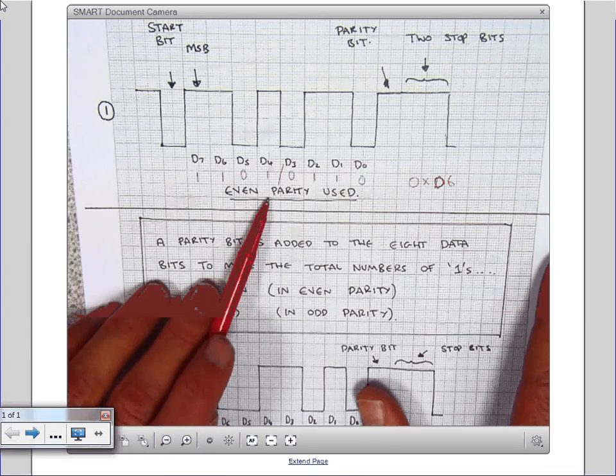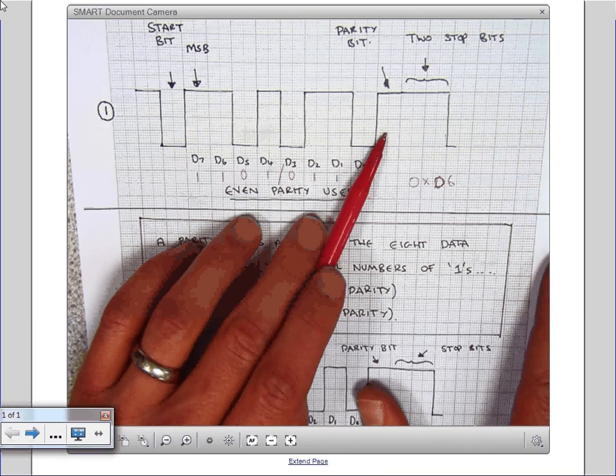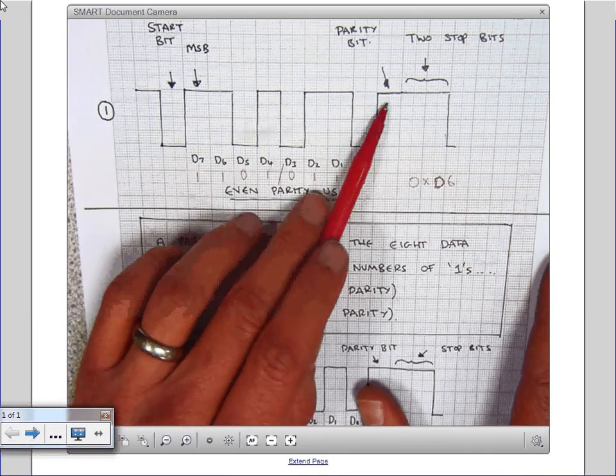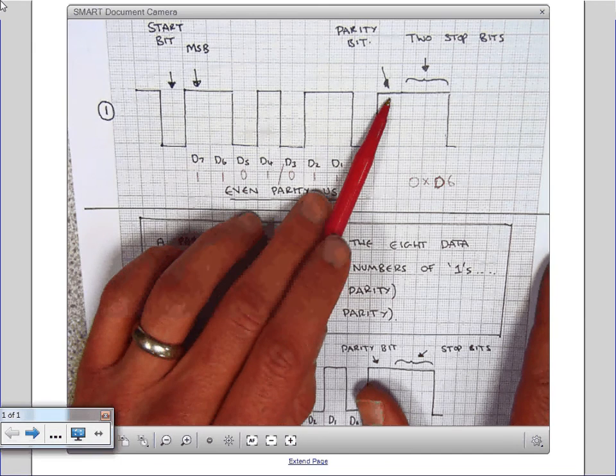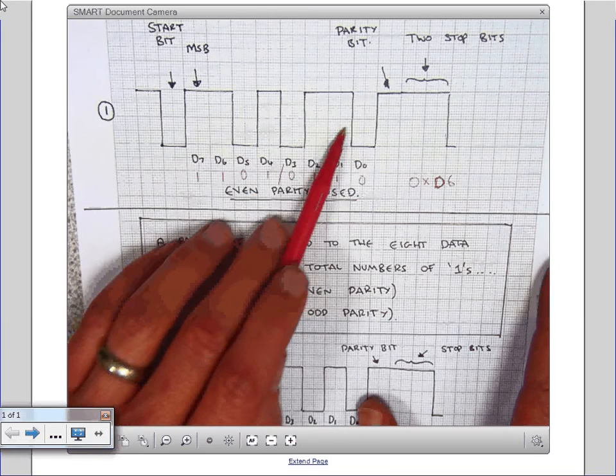If even parity is used, then you use this parity bit to make sure you've got an even number of bits. So we need to make the parity bit high. And that gives us an extra one to give us six ones, six highs, an even number. And that allows you to error check the byte.